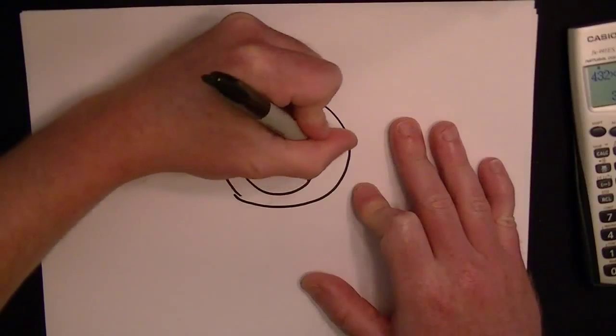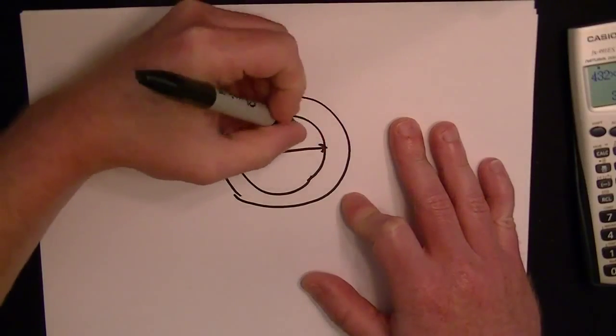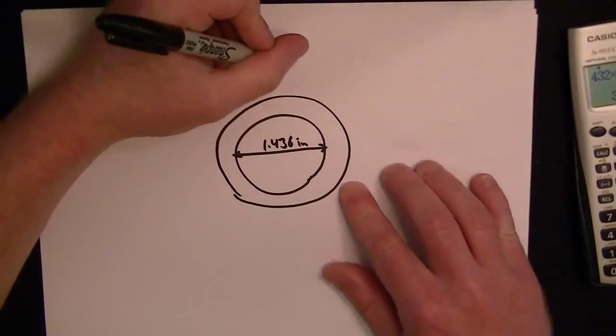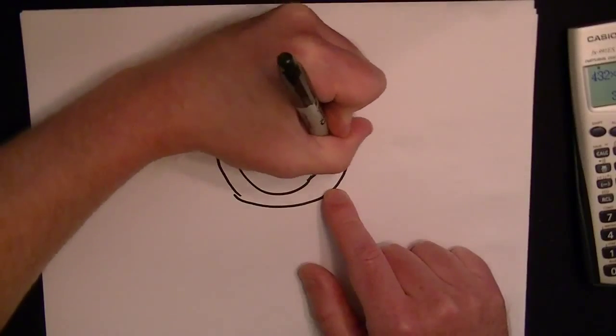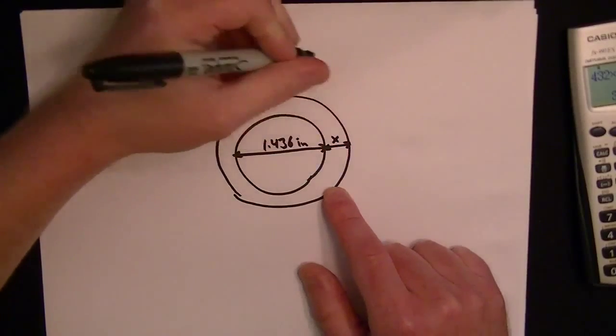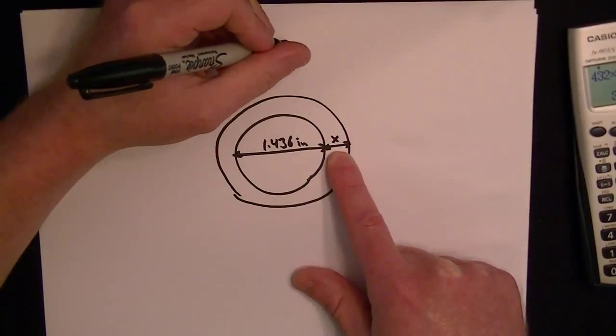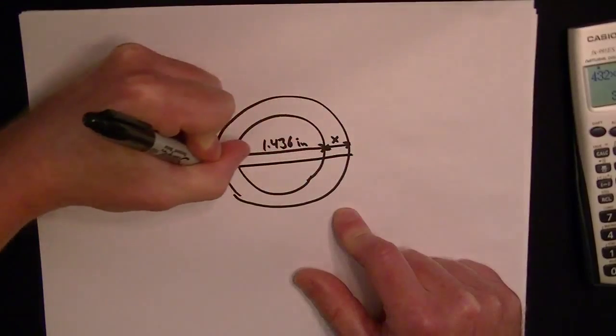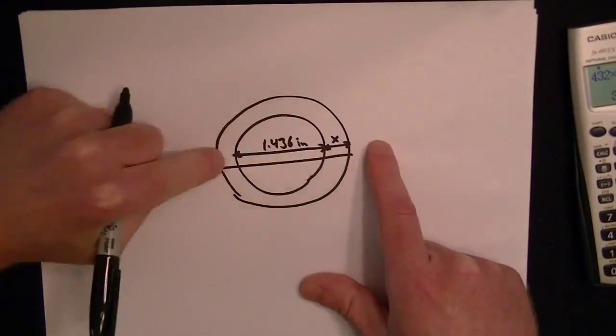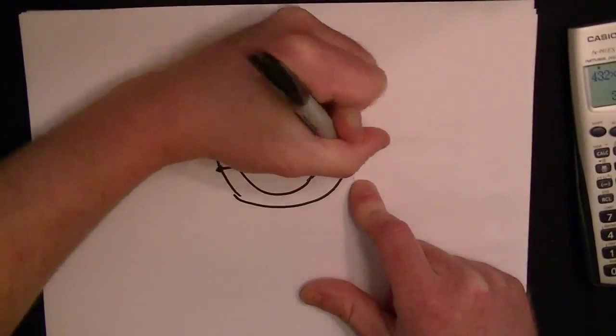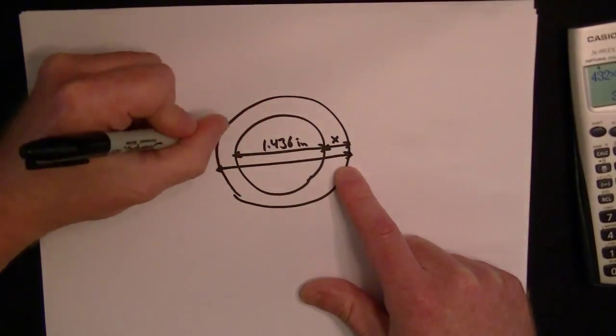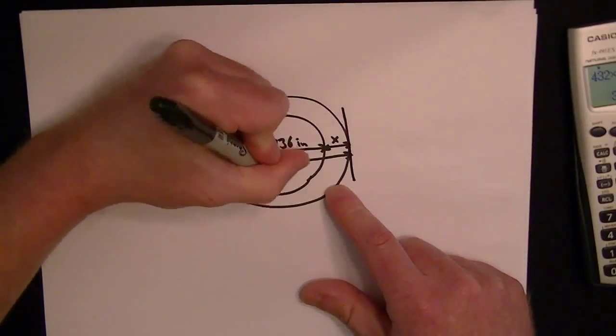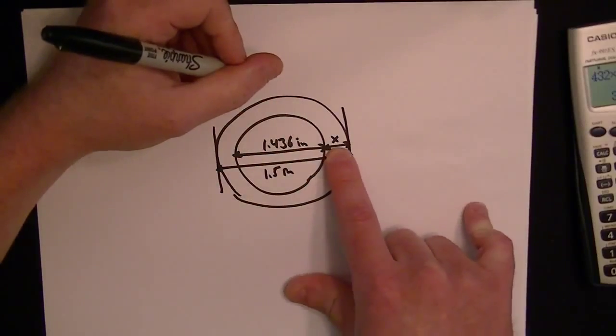And they tell you the inside diameter is 1.436 inches. And then the tube thickness is called X. And they tell you the total diameter, so in other words from one end to the other end. It would normally be through the center but I'm just drawing it below so I can show you better. So it's basically like from the edge to the edge, right? That equals 1.5 inches. So they want to know what X is.